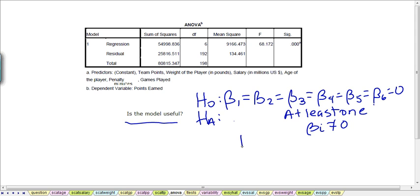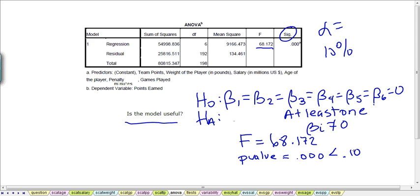Our test statistic for this ANOVA test follows an F distribution. And from this table we see that we're given our test statistic is F of 68.172. And the P value, which is called significance in this SPSS output, so that has been given as .00. So if we use a 10% level of significance, so if alpha is 10%, this is definitely less than 10%.